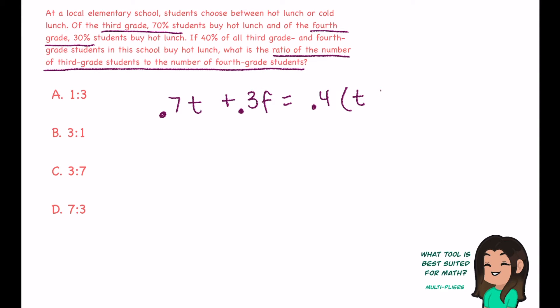Third and fourth grade combined, so that 40% is being distributed to both third and fourth grade. Well, I have two variables and I don't really like working with two variables. I want to try to get them isolated on each side, but I have to distribute this 0.4 first.